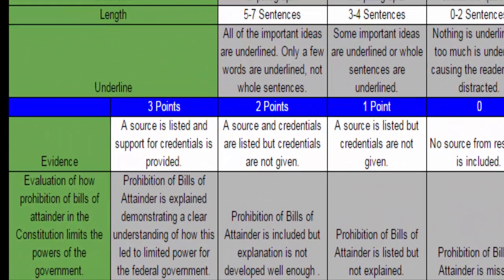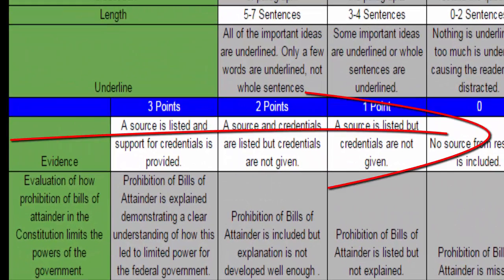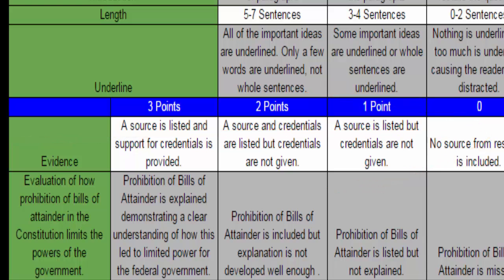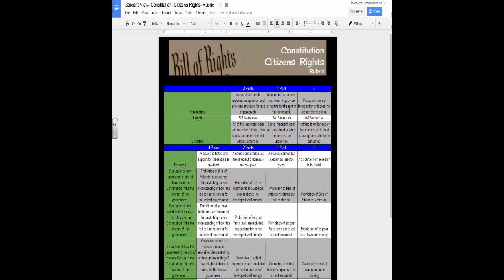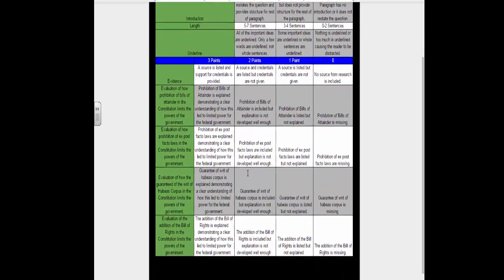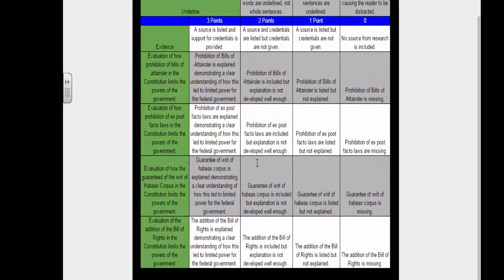The next category or row is the evidence category. This will also be the same for each extended response and is a three-point category. The remaining categories or rows describe how to answer the extended response — this is the content of the extended response I am looking for. These are all three-point categories.